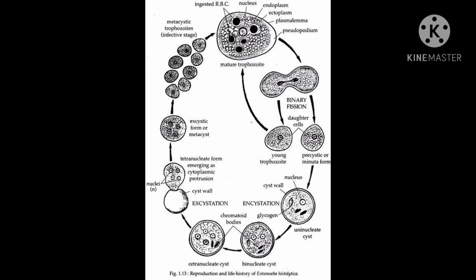Hello my dear students, you are looking at the Entamoeba histolytica life cycle. It starts with the trophozoite stage of Entamoeba histolytica. The mature trophozoite undergoes repeated binary fission, which leads to the formation of a precystic stage.